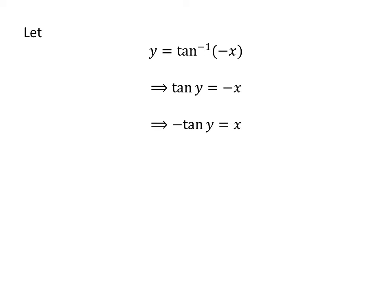Taking the minus sign to the left side of the equation, we get -tan(y) = x. As we know, the trigonometry identity -tan(y) = tan(-y).